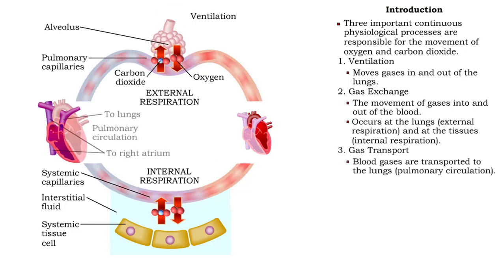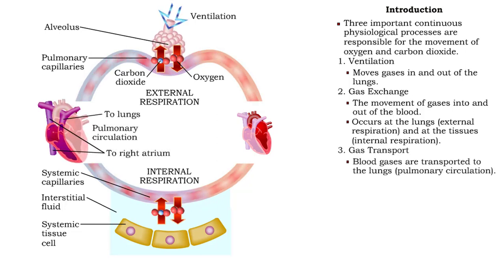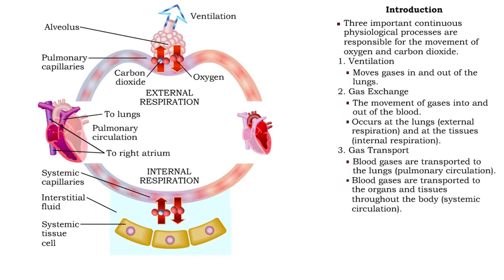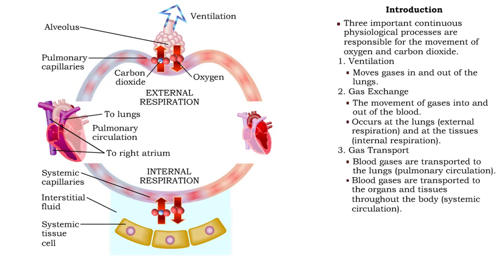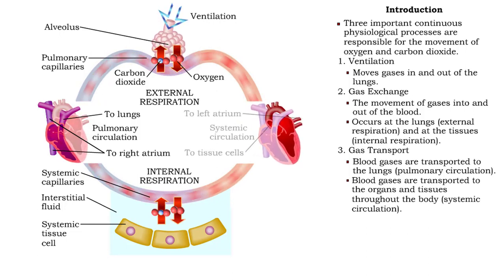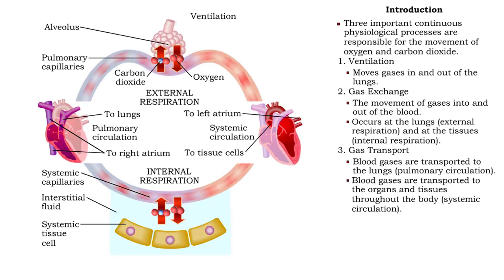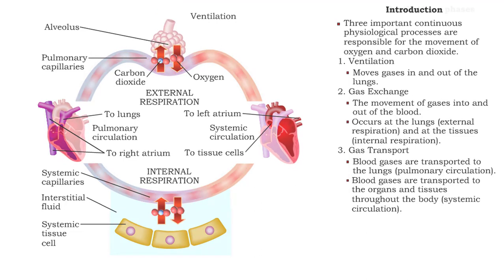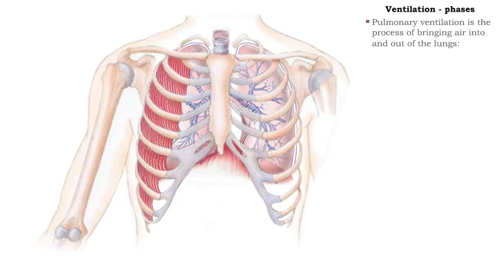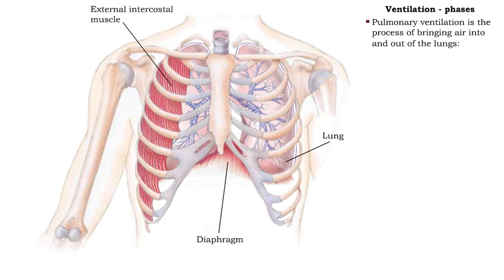Blood gases are transported throughout the body via the bloodstream. The pulmonary circulation transports the blood gases to the lungs, while the systemic circulation carries them to the organs and tissues throughout the body.